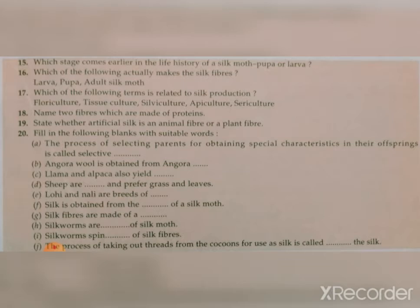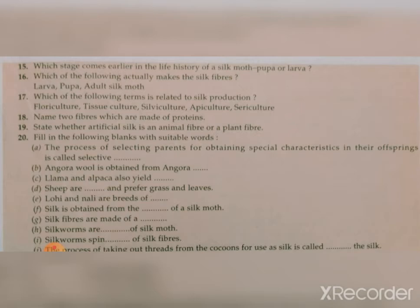Silk is obtained from the larva of a silk moth. Silk fibers are made up of a protein. Silkworms are the larva of silk moth. Silkworms spin threads of silk fibers, and the process of taking out threads from the cocoons for use as silk is called reeling the silk.